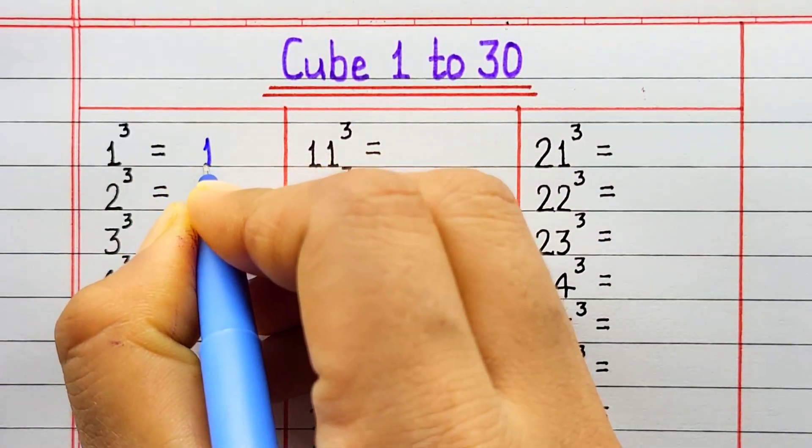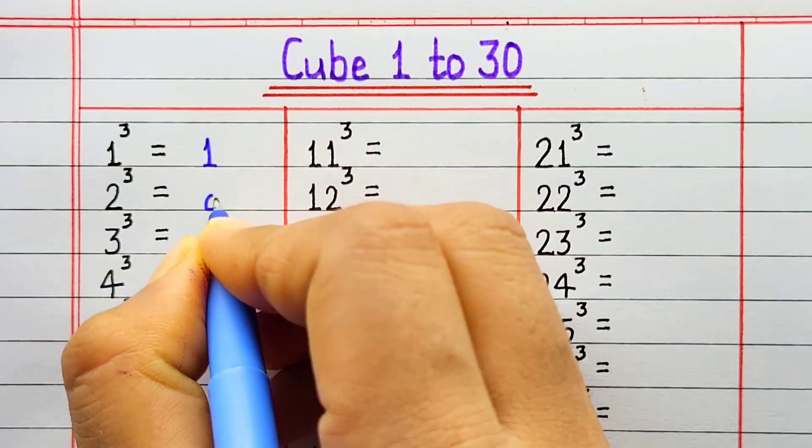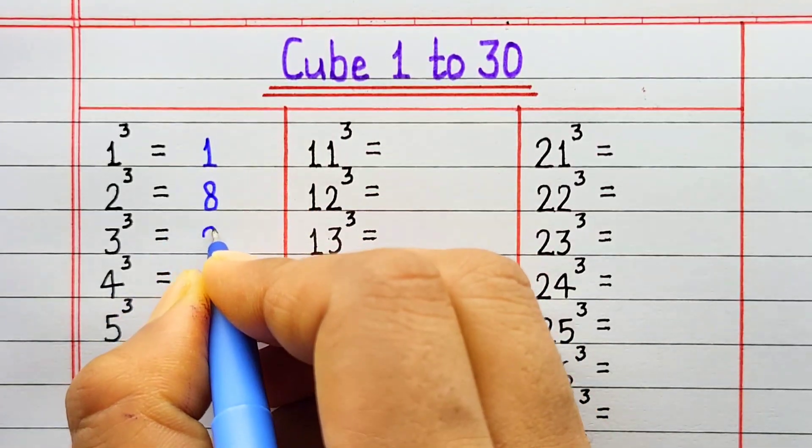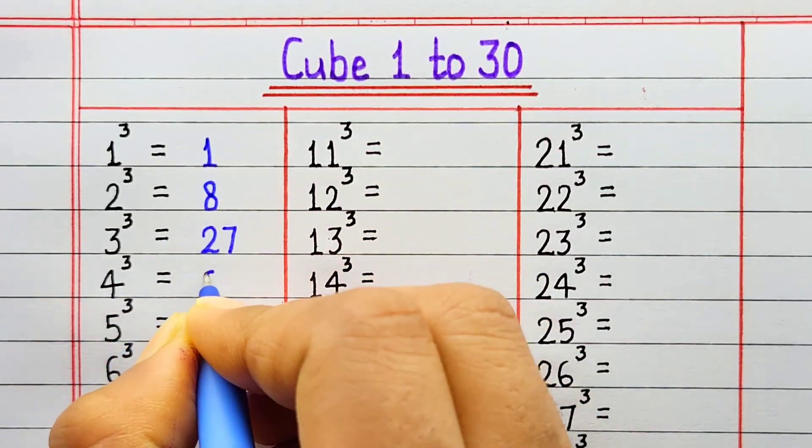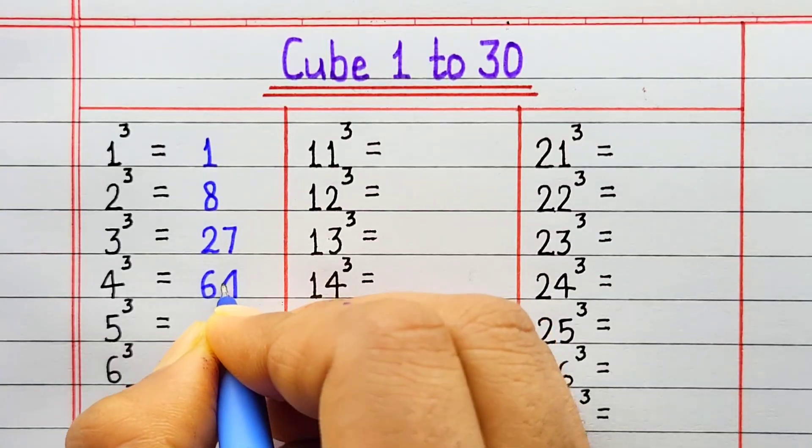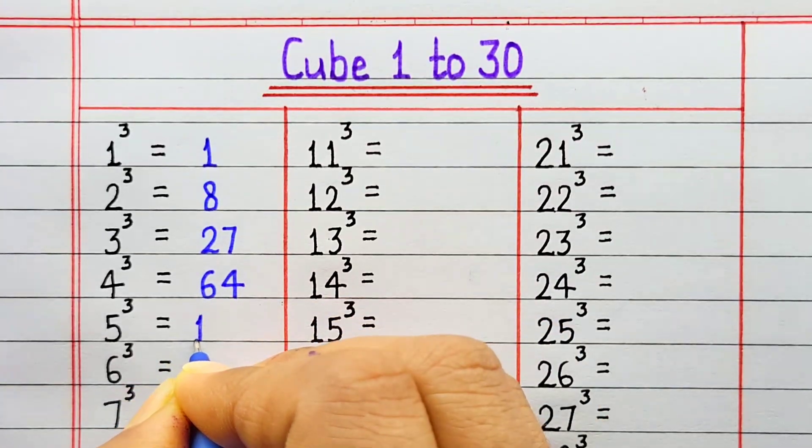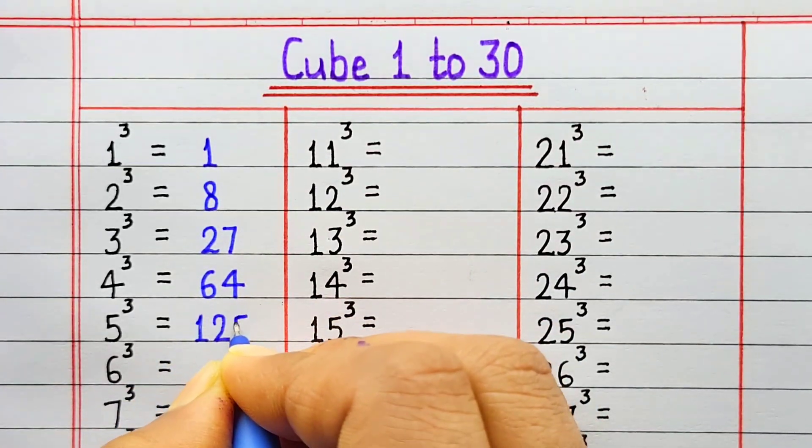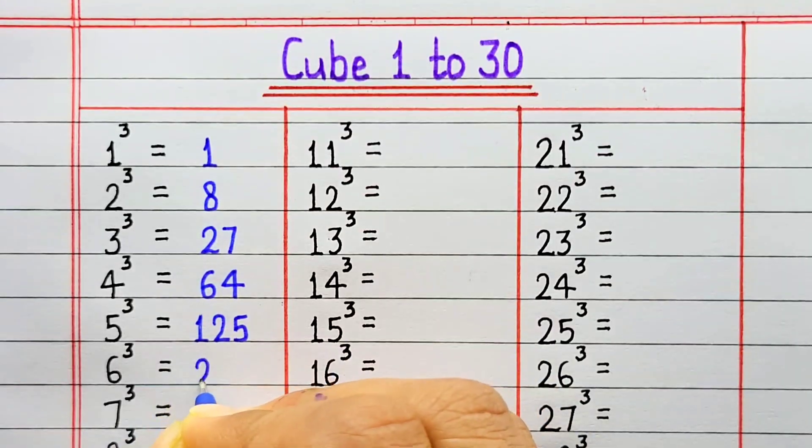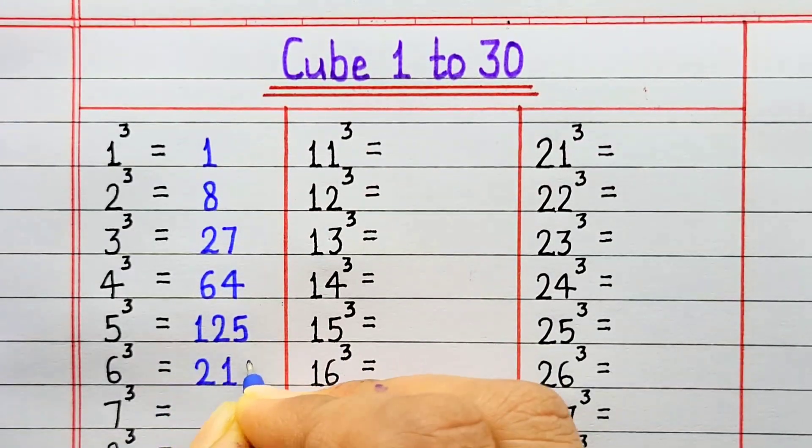Cube of 1 is 1. Cube of 2 is 8. Cube of 3 is 27. Cube of 4 is 64. Cube of 5 is 125. Cube of 6 is 216.